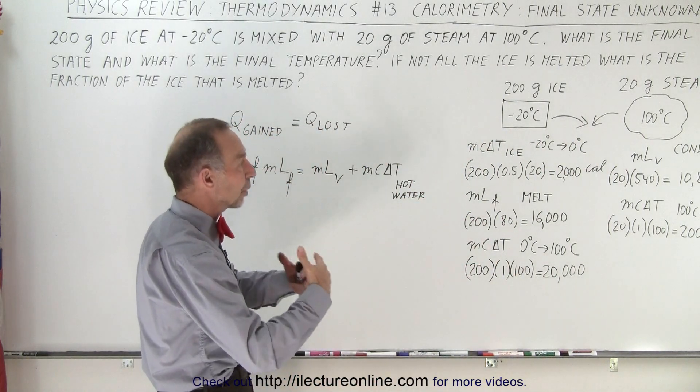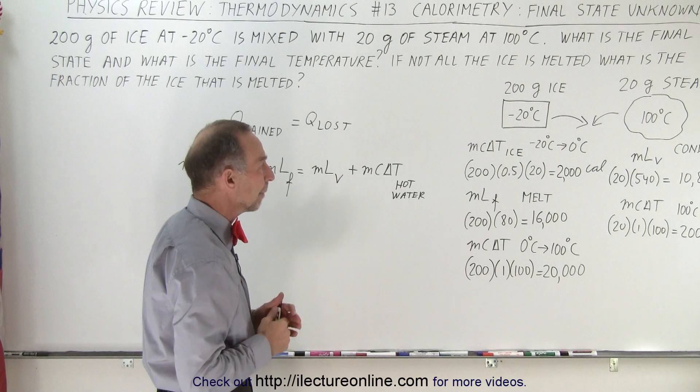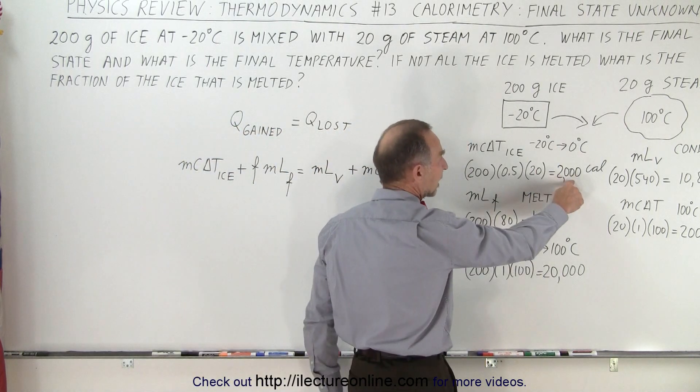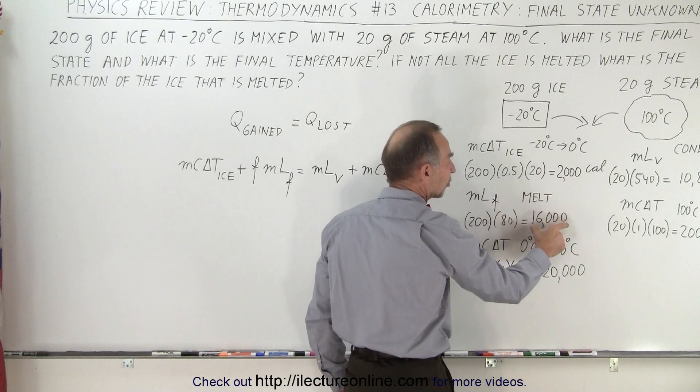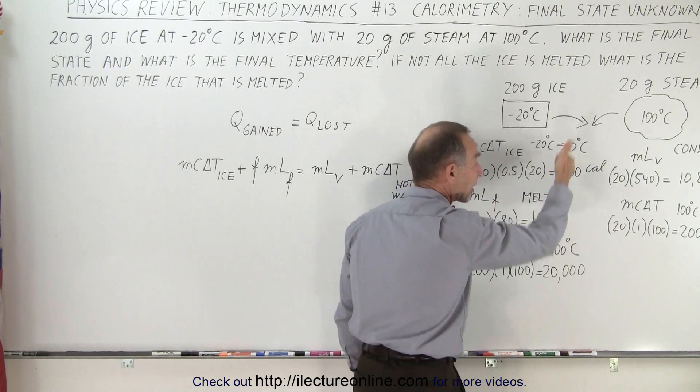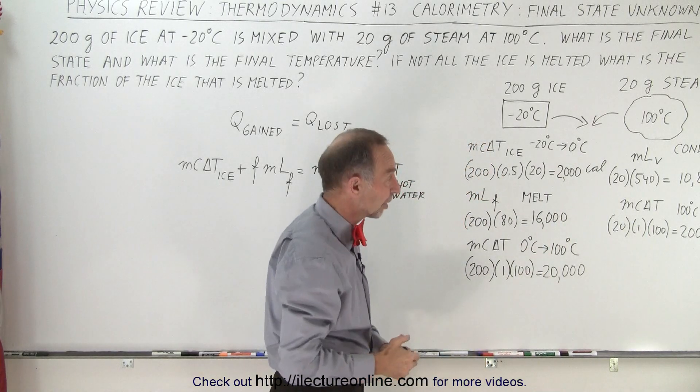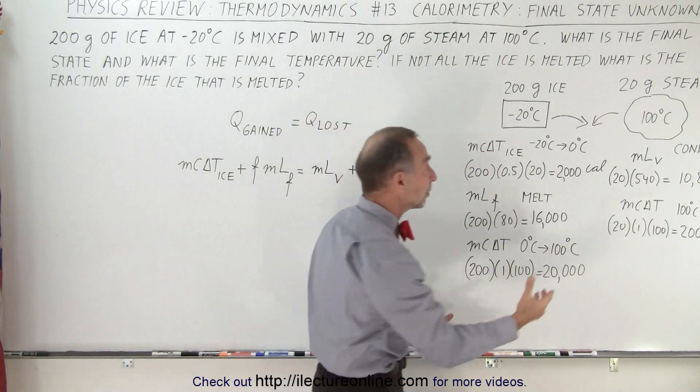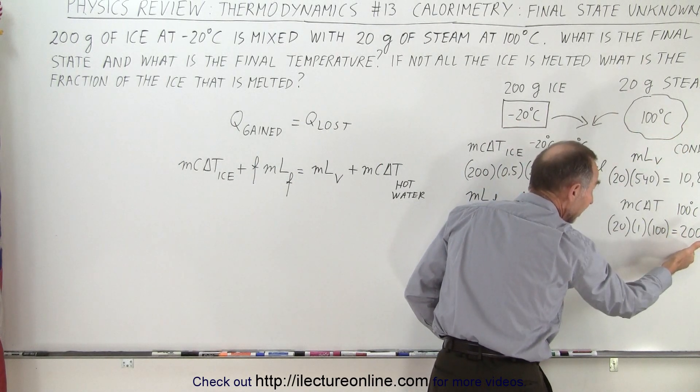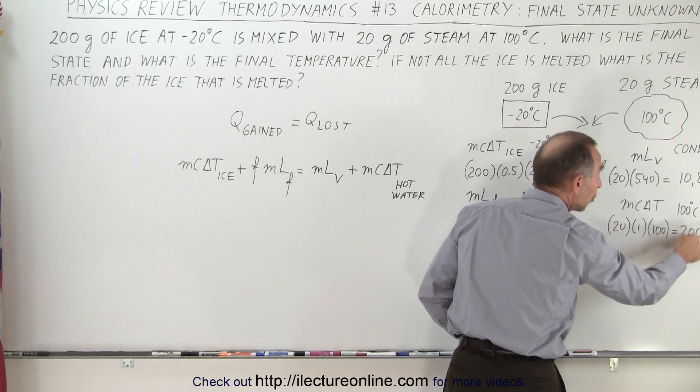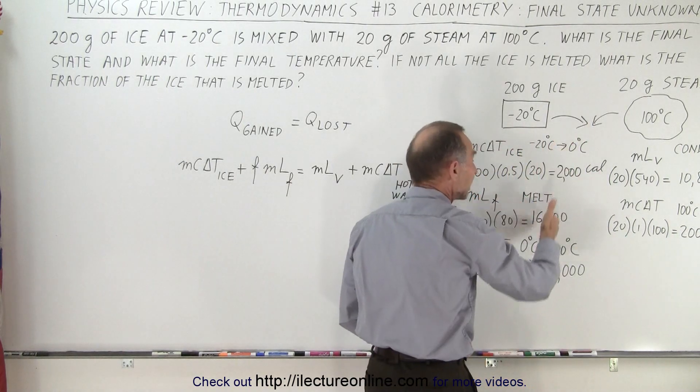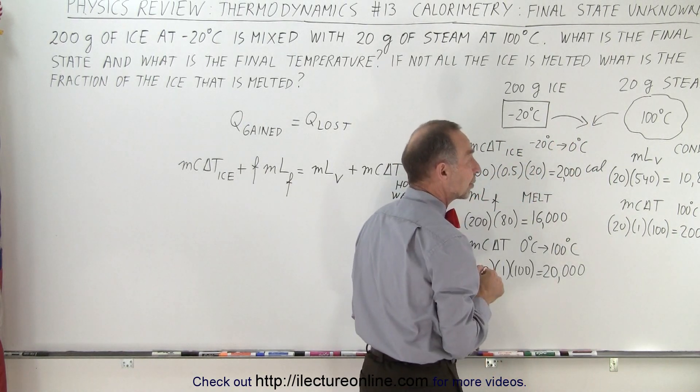So now you have to look at it and say, well, where do we think it's going to end up? Notice that to melt all the ice, you need 2,000 calories to get the ice up to 0, and another 16,000 calories to melt all the ice. So you need 18,000 calories to melt the ice. Do you have 18,000 calories available within the steam? Well, when the steam gets all the way down to 0, it will only release 12,800 calories, which is not enough to melt all the ice, because that requires 18,000 calories.